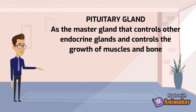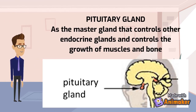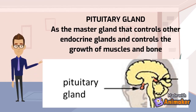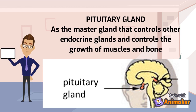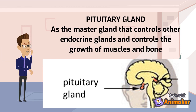Now let's see the functions of each human endocrine gland. Starting with the first one — the pituitary gland. The pituitary gland is the master gland that controls other endocrine glands and controls the growth of muscles and bones. As you can see in the diagram, the pituitary gland is located at the base of our brain.